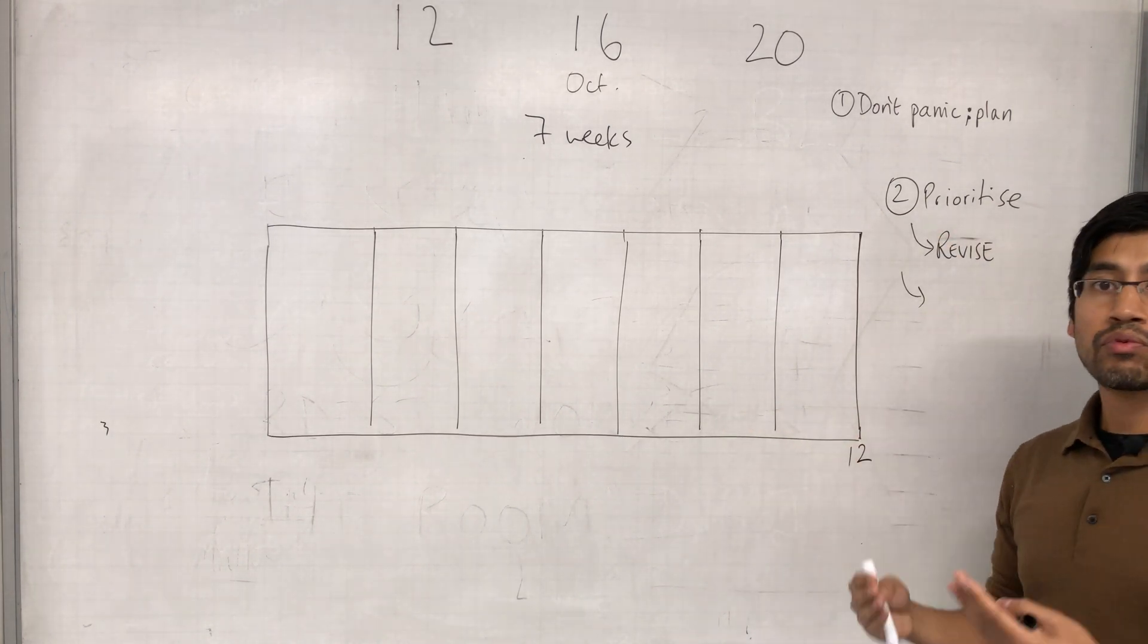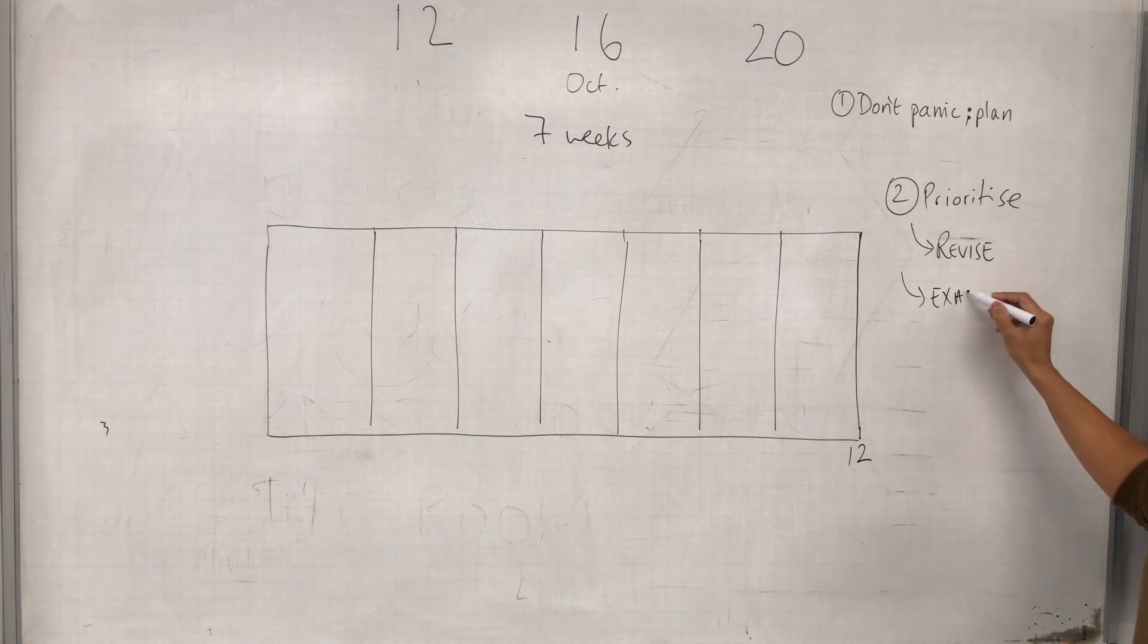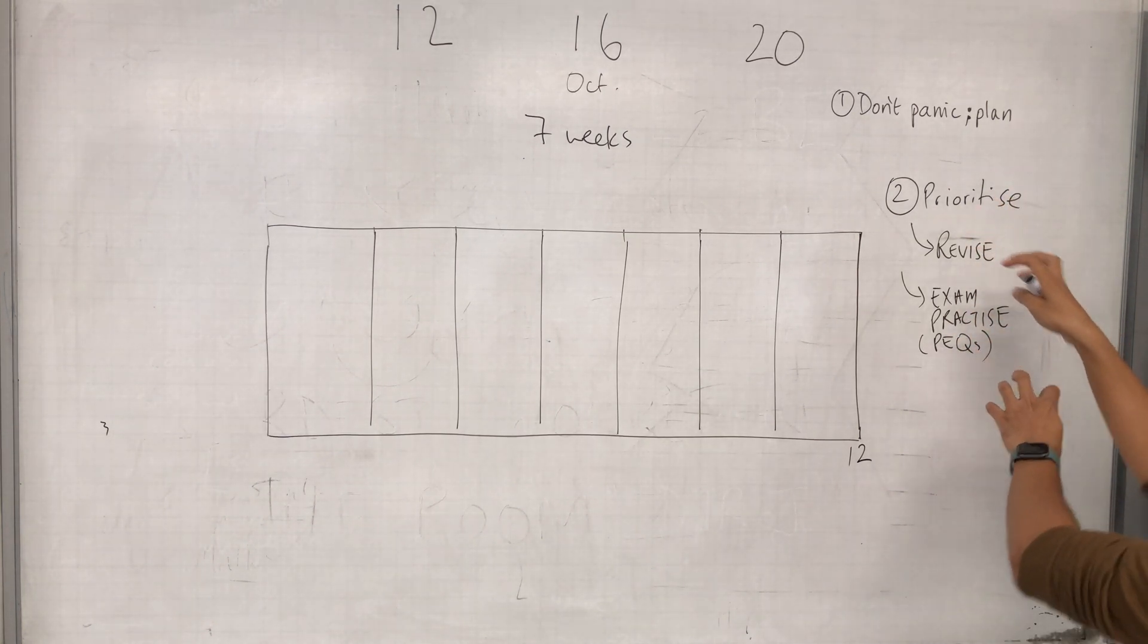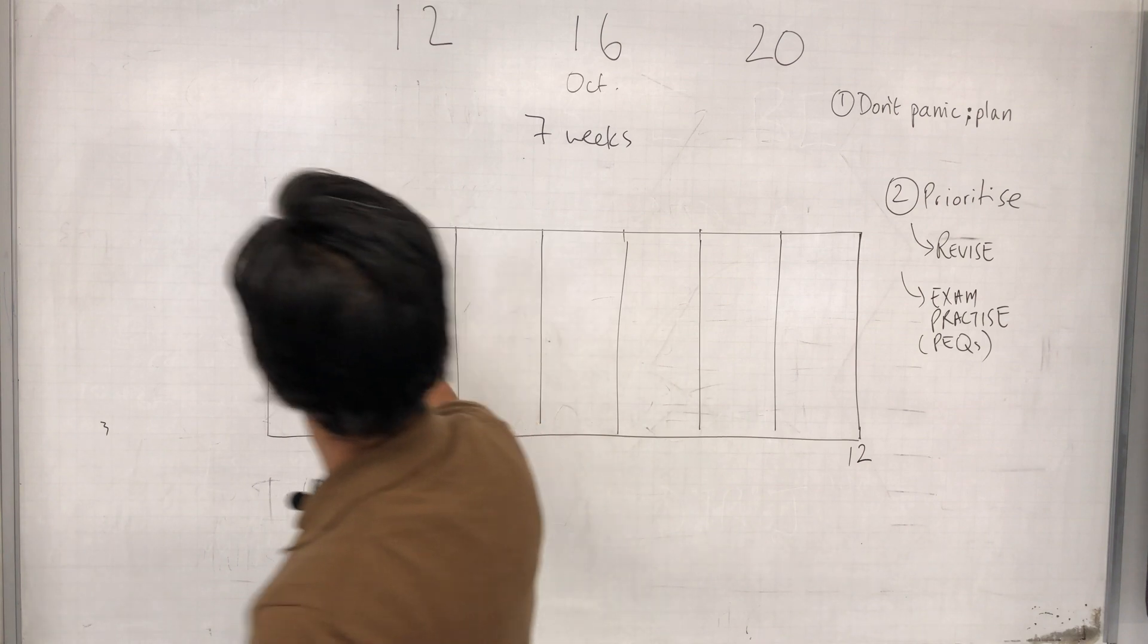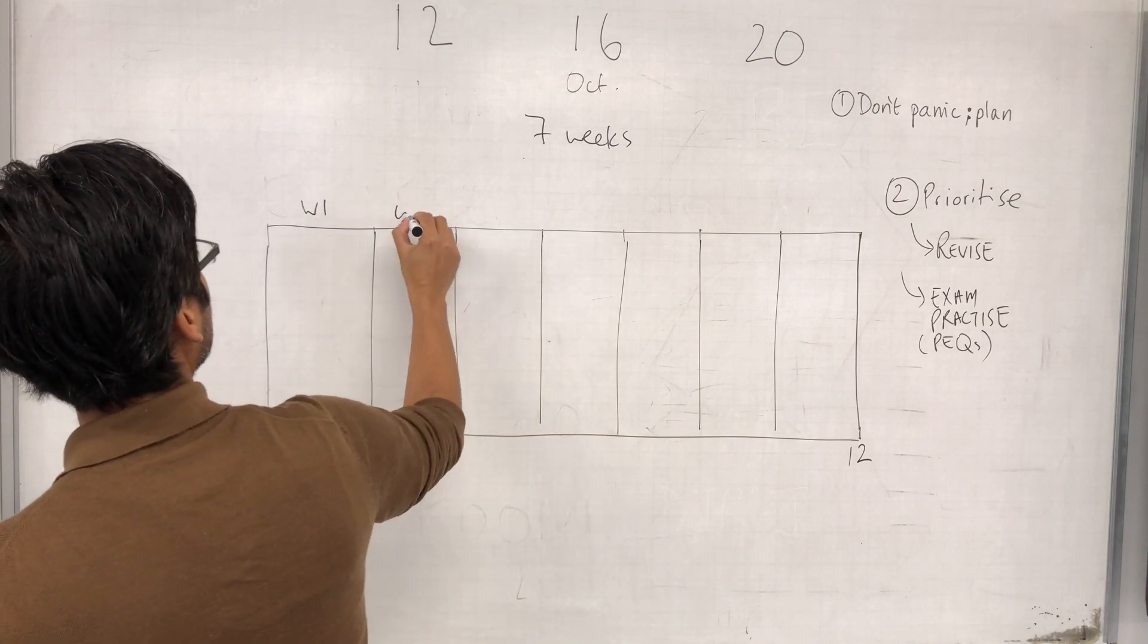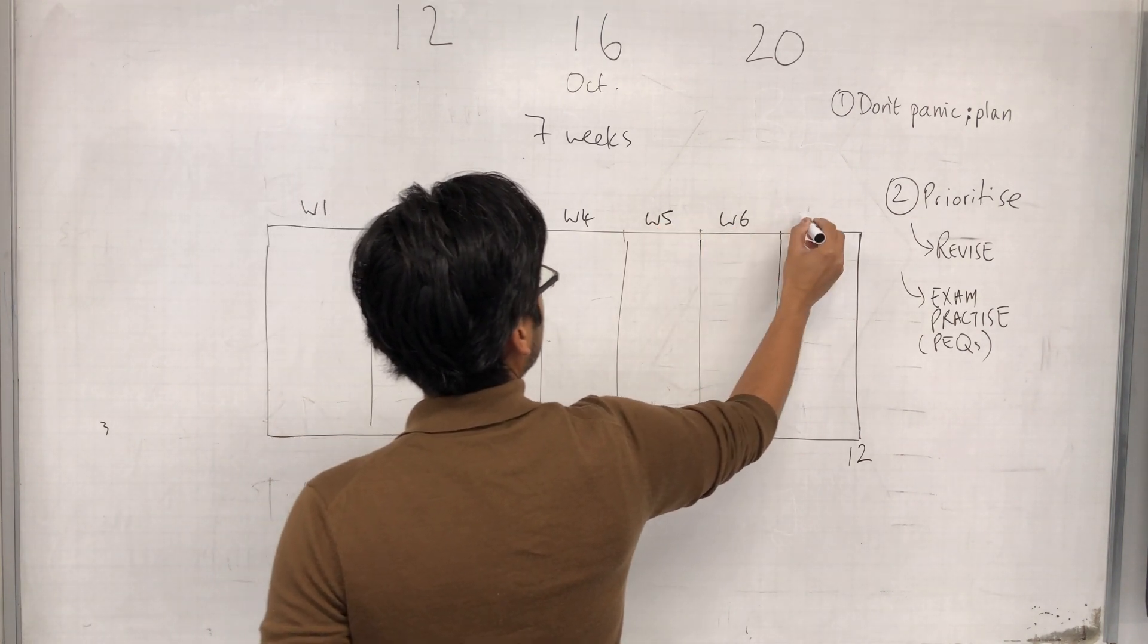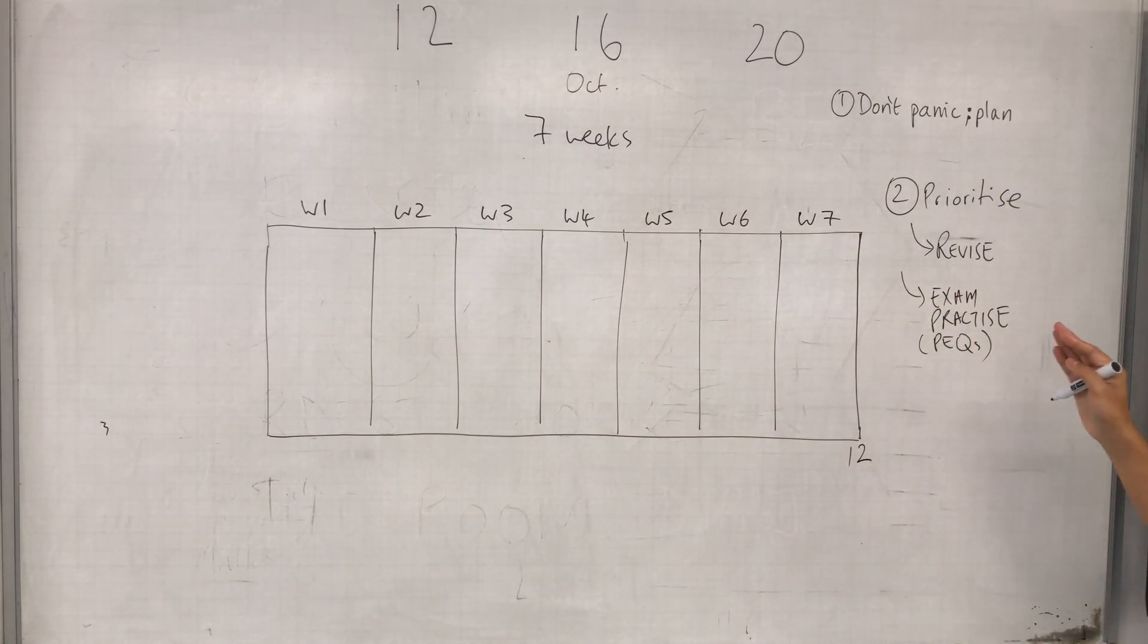The other big priority in the preparation of A-level exams is exam practice - past exam questions. So those are the two priorities. These are the two things we need to fit into the plan. Let's just quickly do some labeling here: week one, week two, week three, week four, week five, week six, week seven. We've got revision to do and exam practice to do.